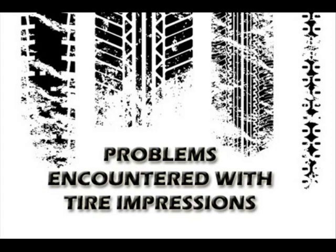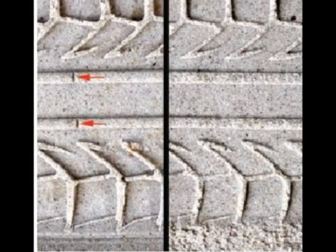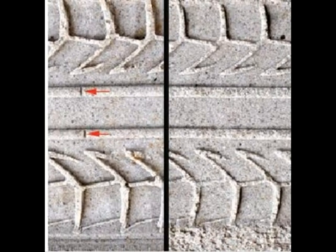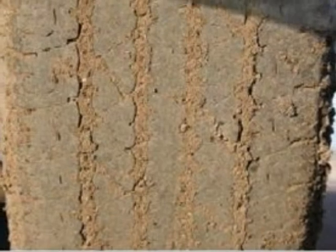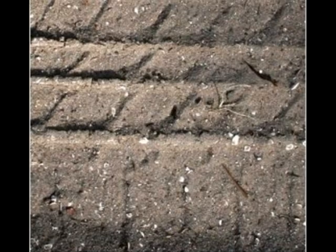Problems encountered with tire impressions. Surface conditions influence the details present in the impression. Foreign materials impacted in the tread can result in an impression not indicative of the actual characteristics of the tire. Particles falling back onto the impression can destroy important details used in the analysis of impressions.